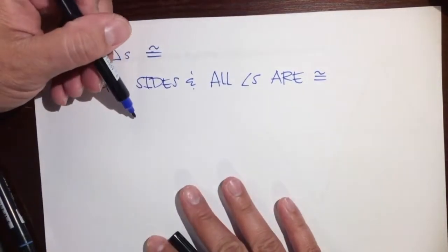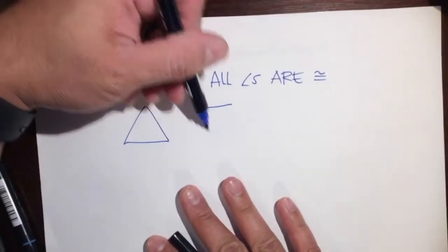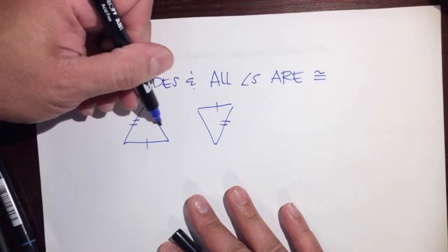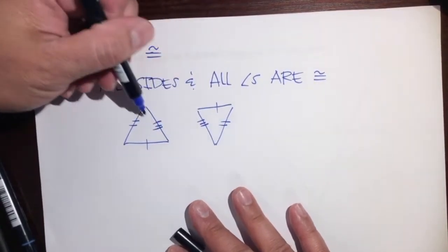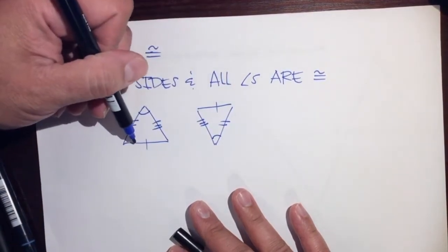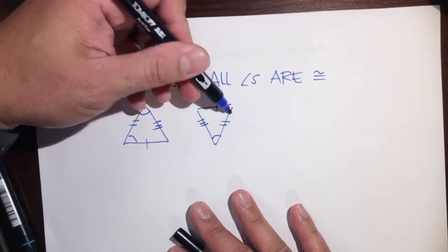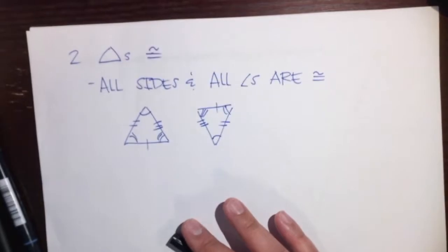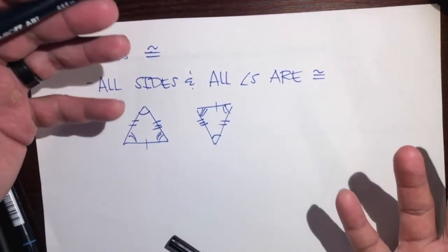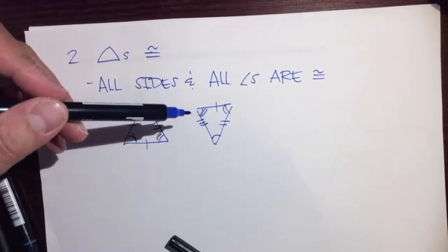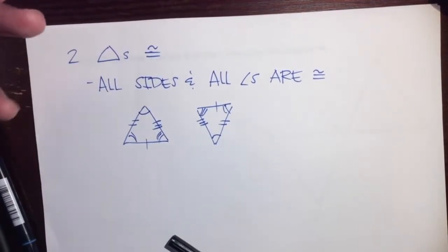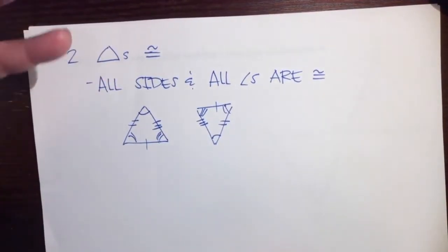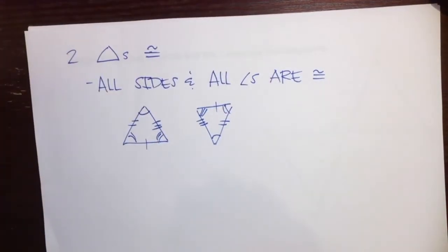Think about that. If we have two triangles, we have to prove that three pairs of sides are congruent and three pairs of angles are congruent. That's six things. If we were to make a flowchart, that would be six bubbles we have to fill in to prove that the two triangles are congruent.